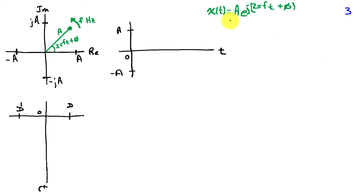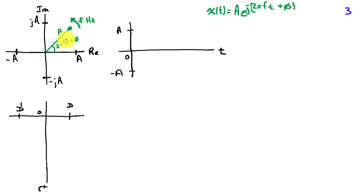On this slide, we're going to generalize this slightly by allowing for an amplitude a and a phase phi. The phase represents the starting phase when t is equal to zero — that's where our point is located at time zero. The angle is now 2 pi f t plus phi. This point is still rotating around the origin at f cycles per second, and instead of unit distance from the origin, the amplitude a is the distance from the origin.